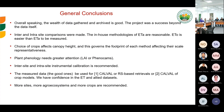In conclusion, overall speaking, the wealth of data gathered and archived is good. The project was a success beyond the data itself — it created a community of practice with a lot of dynamism. Inter- and intra-site comparisons were made. In-house methods of actual evapotranspiration are reasonable, and potential evapotranspiration is easier than actual evapotranspiration to measure. The choice of crop is reflected by canopy height, which governs the footprint of each method. Plant phenology is also very important and needs more emphasis in the future.